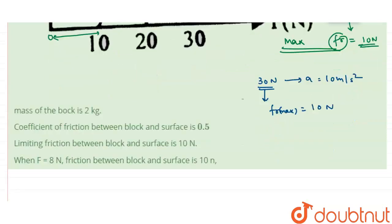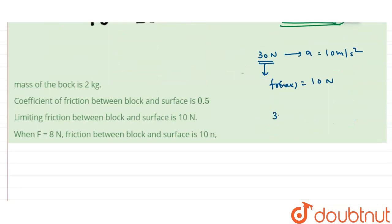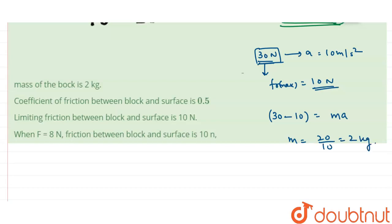Writing the force equation: 30 newton minus friction force 10 newton equals ma. So 30 minus 10 equals 20, and acceleration is 10, giving m equals 2 kilogram. So the mass of the body is 2 kilogram.